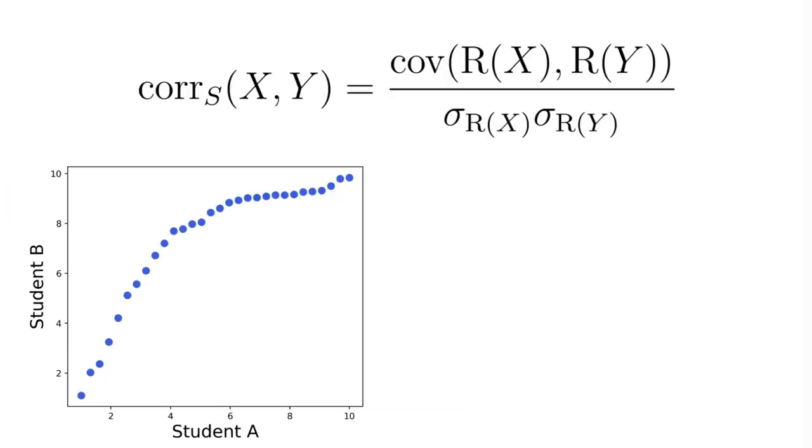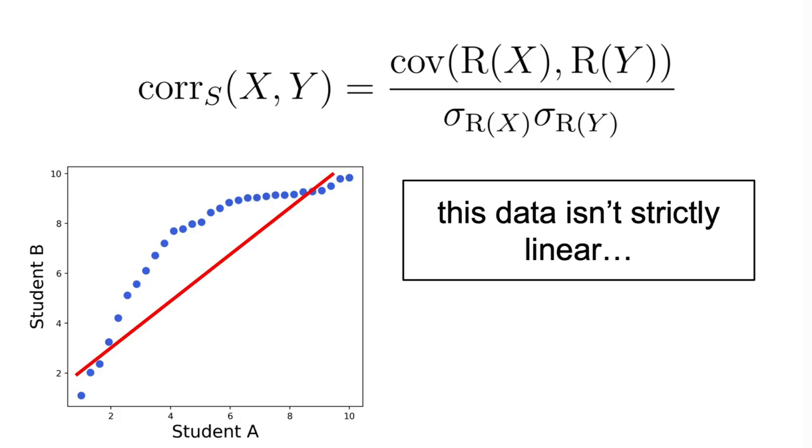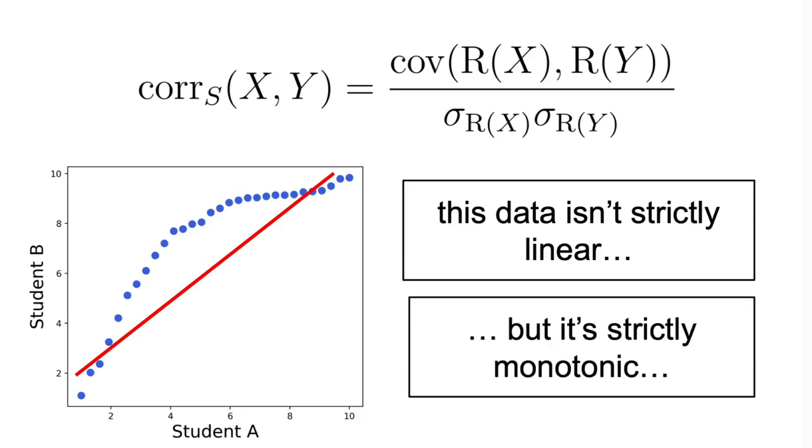Firstly, as mentioned before, the Spearman correlation doesn't assume a linear relationship and it evaluates the monotonic relationship. Meaning that as one variable increases, the other either consistently increases or decreases, but not necessarily at a constant rate.